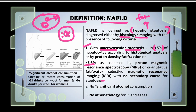The second criteria for the definition of NAFLD is there should be no significant alcohol consumption. Significant alcohol consumption is defined as ongoing or recent consumption of more than 21 drinks per week for men — meaning more than 3 drinks per day — and more than 14 drinks per week or more than 2 drinks per day for women.